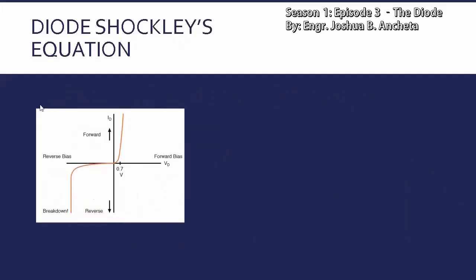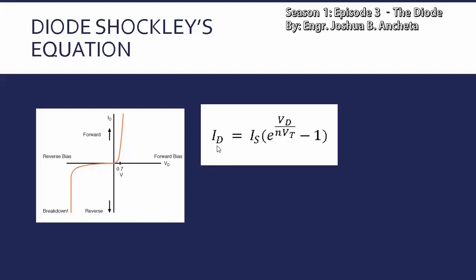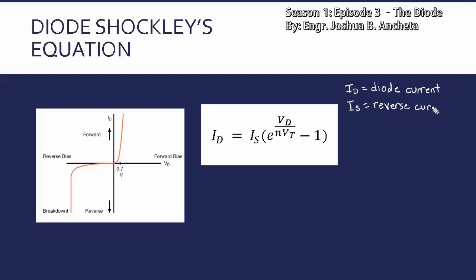This IV curve of ideal model can be represented by the diode Shockley equation. For the Shockley equation, this is ID — yung diode current — equals IS — yung IS ito yung reverse current — times the quantity E raised to VD over N VT minus one. List down natin yung mga parameters: ID is diode current; IS, this is the reverse current; VD, this is the biasing voltage; then N, ito yung tinatawag na ideality factor of the semiconductor — pwedeng one, pwedeng two; kapag hindi binigay, assume one.